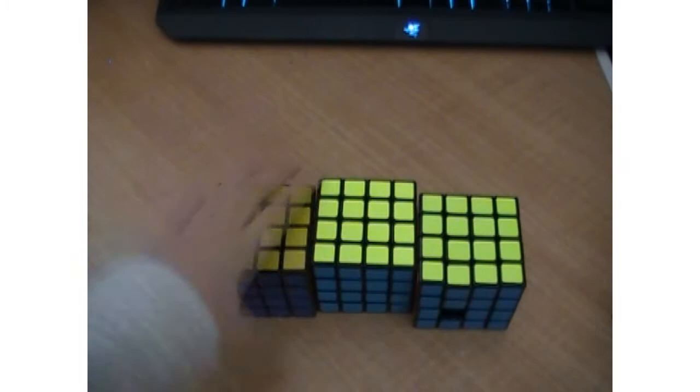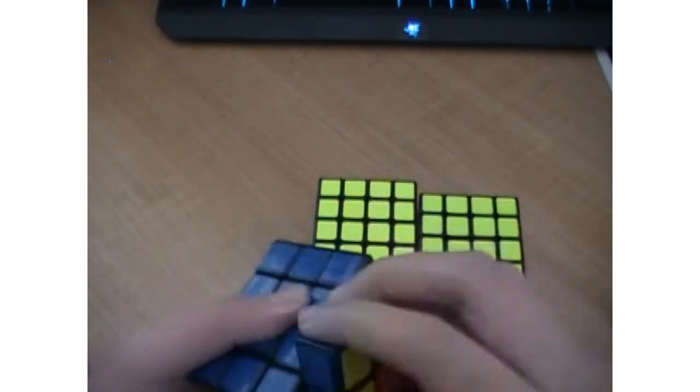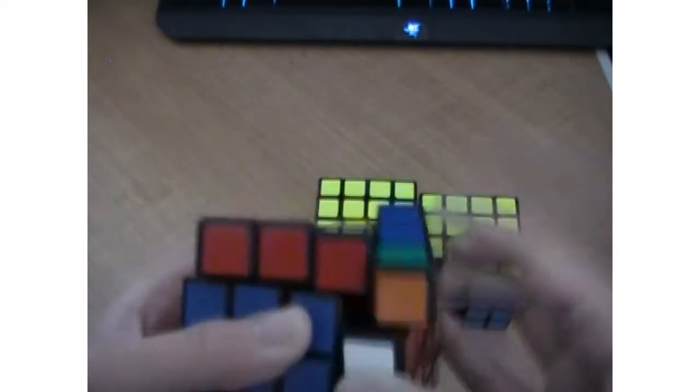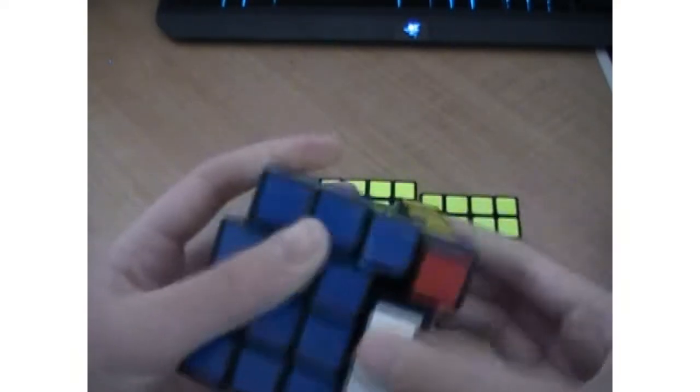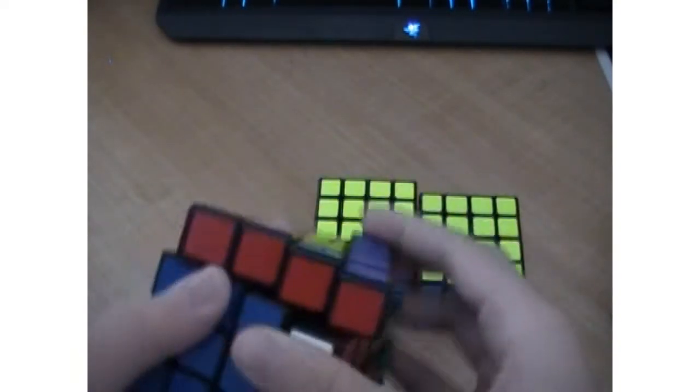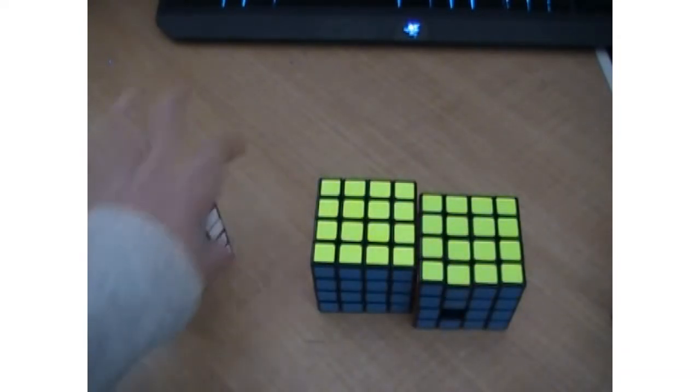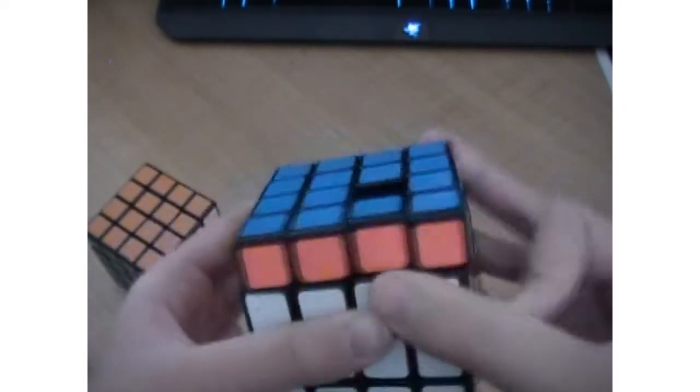Here's my 4x4 collection. I have a small 4x4 collection and I also plan on expanding it. This is a Shang Shao 4x4 and it doesn't turn all that great. It has a nice mechanism, but you know, that's Shang Shao. Then here's the YJ Yusu and it's missing that center.